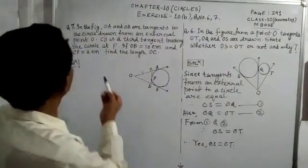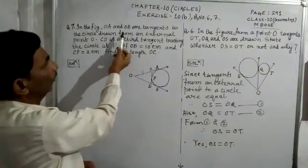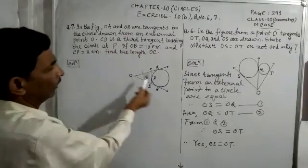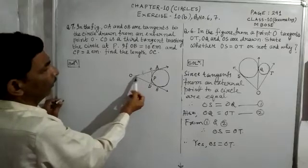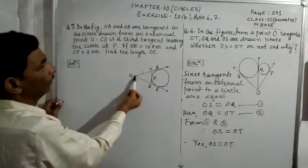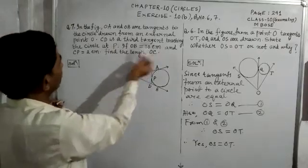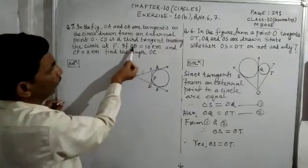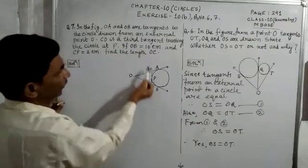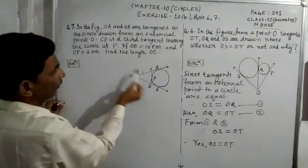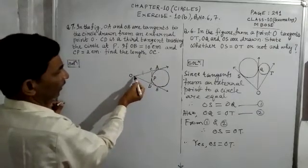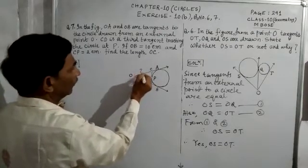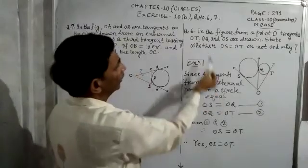Now look at question number 7. In the figure, OA and OB are tangents to the circle drawn from an external point O. CD is a third tangent touching the circle at P. Given: OB is equal to 10 cm and CP is equal to 2 cm. We have to find the length OC.